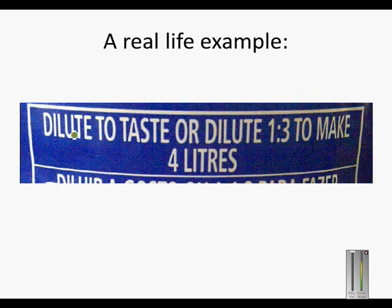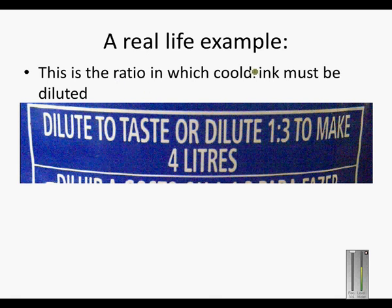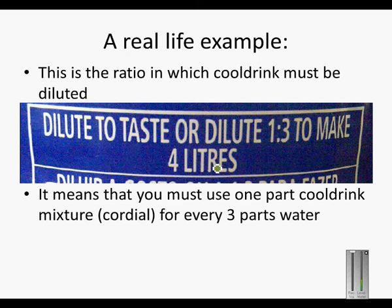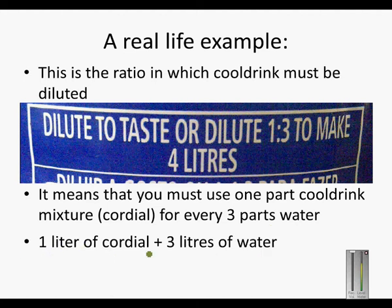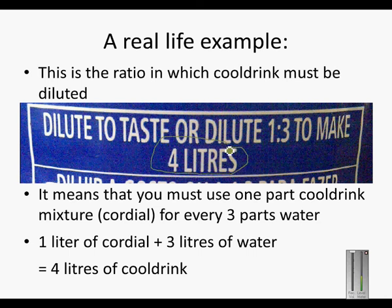A real life example. This was taken from a label of a cool drink bottle. This is the ratio in which cool drink must be diluted. It says: dilute to taste, or dilute 1 to 3 to make 4 liters. It means that you must use 1 part cool drink mixture — referred to as cordial — for each 3 parts water. So 1 liter of cordial plus 3 liters of water will give me 4 liters of cool drink, and that is where this 4 liters comes from.